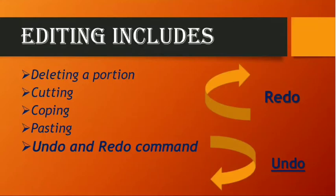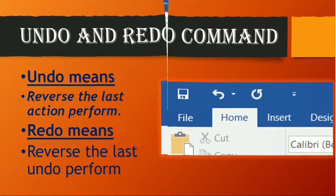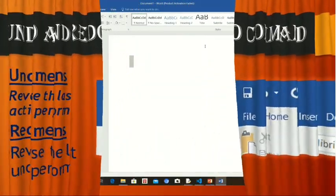Deleting a portion means deleting a particular part. Cutting means cutting a particular part and pasting it somewhere else. Copying means copying it — it will not be cut from there, it will just be copied. Pasting means to paste it. Undo means reverse the last action performed — the work you did last will be reversed, taking one step back. Redo means reverse the last undo performed — the redo takes one step forward. See the image on the right side: the left-direction arrow is undo and the circular arrow is redo.